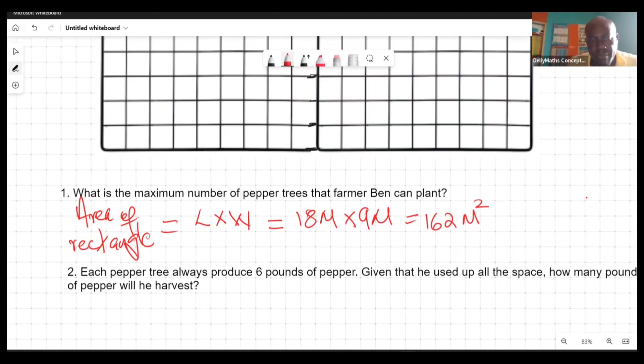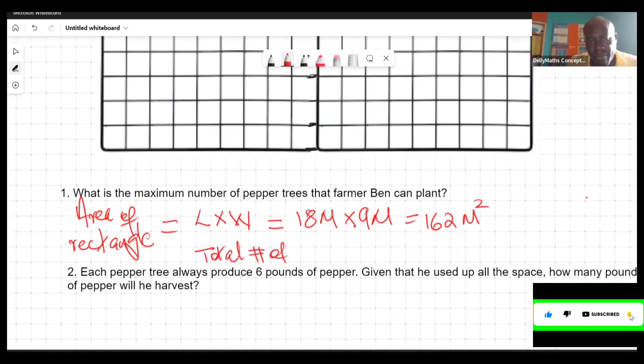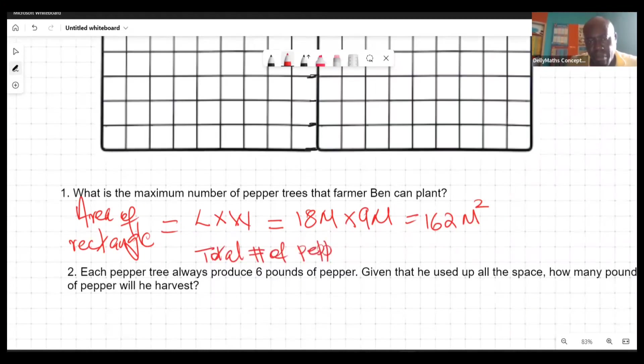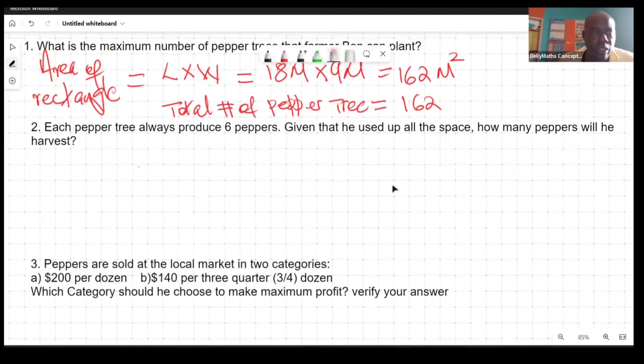So we could say the total number of pepper trees is 162. So it's 162 trees because each tree will take one square meter.